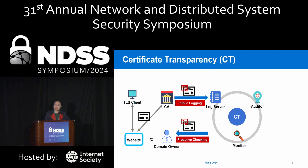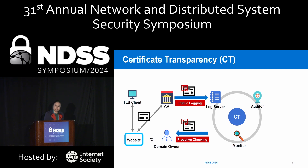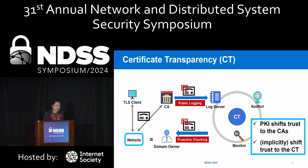A possible answer is the certificate transparency framework. Since Google first launched the public log server in 2011, the CT ecosystem has grown very fast, with PKI, TLS, service providers, and certificate authorities participating. The main idea of CT is to provide transparency during the certificate issuing process. This is done by requiring all CAs to submit certificates to publicly visible log servers so that anyone, including domain owners, could issue queries through the monitor and check all certificates issued under their own name.